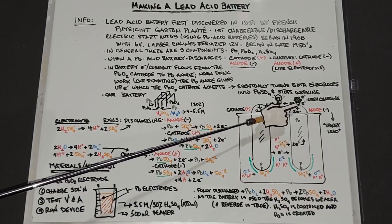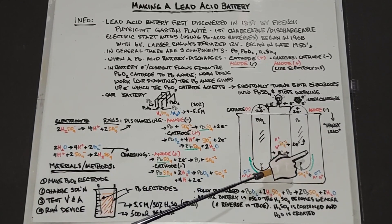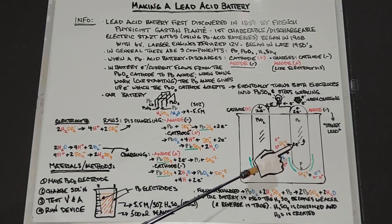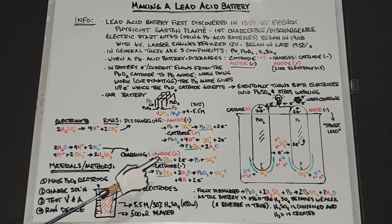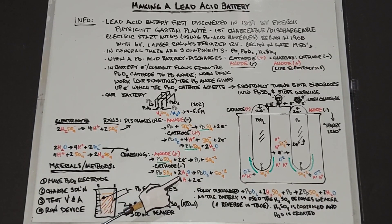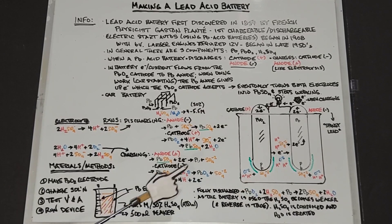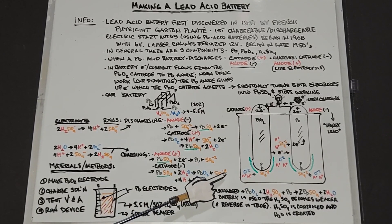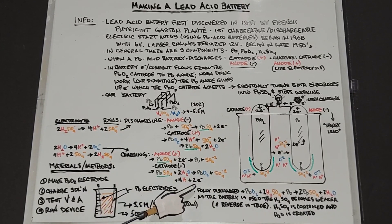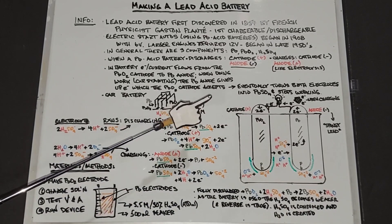On the cathode side, you've got your lead sulfate plus the water, you get your lead dioxide back plus sulfate ions plus the four hydrogens which will combine with these again to form your sulfuric acid plus the two electrons which again are coming through the charging process. So you can see a lot is happening when the battery is charged and discharged.